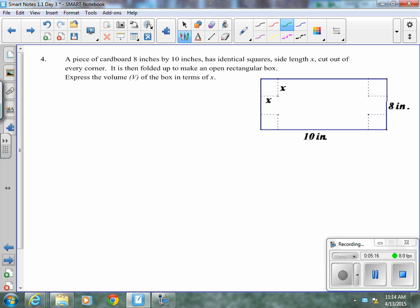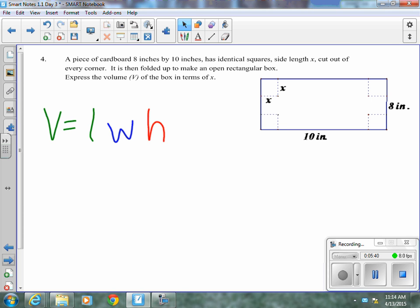Number 4, a piece of cardboard 8 inches by 10 inches has identical squares, side length X, cut out of every corner. It is then folded up to make an open rectangular box. Express the volume V of the box in terms of X. So our volume is equal to length times width times the height. And I'm color coding here so you can kind of see what we're talking about.